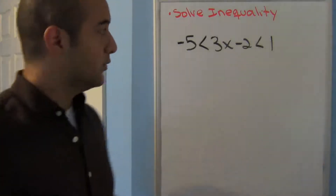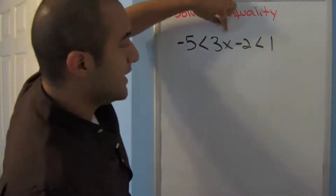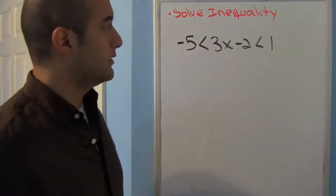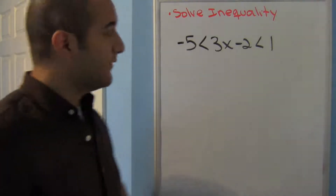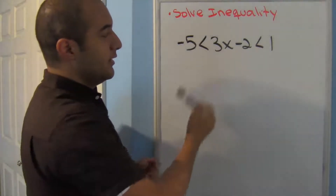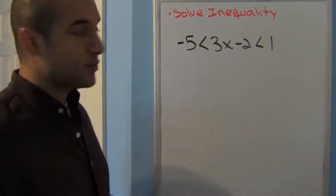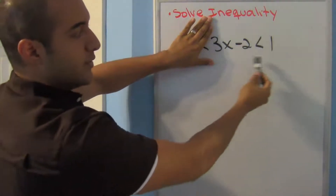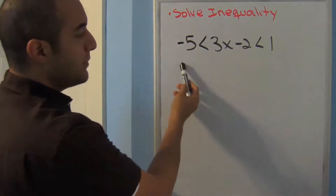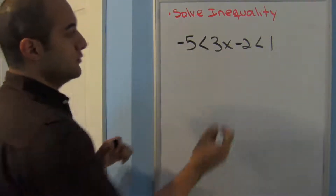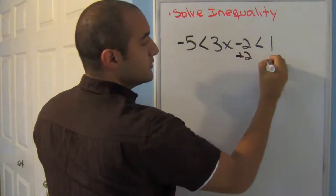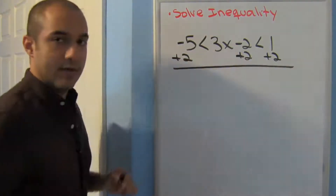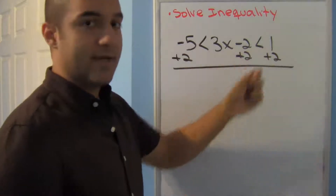Now what about something like this — notice that I have an x in the middle and I have less-than symbols on both sides. These were always my favorite because I get to work on three sides at the same time. Notice what I need to do here: if I just had this I would add 2 to both sides, but there's something happening on the left side too, so I need to add 2 to all three sides.